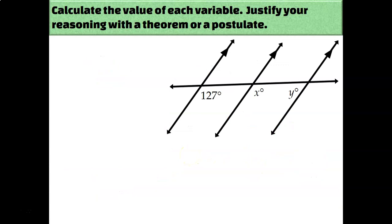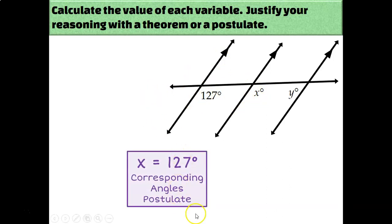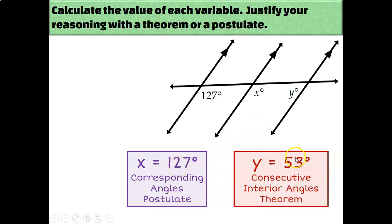Let's kick it up one more notch and have three parallel lines instead of just two. The properties are still the same — the same angle pairs are congruent or supplementary, there's just more diagram to look at. The angle labeled 127 and the angle labeled x are corresponding angles — both in the bottom right-hand corner — so they must be congruent, meaning x is 127 degrees by the corresponding angles postulate. x and y are consecutive interior angles — same side of the transversal, in between the two parallel lines — so they're supplementary. Looking at the diagram, y is obviously acute, not 127 degrees. So 180 minus 127 gives y equals 53.